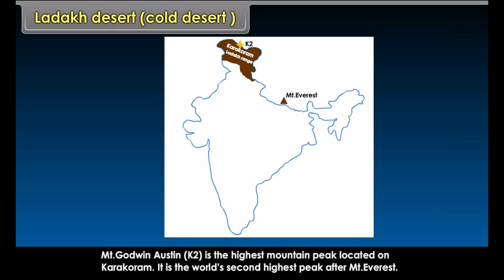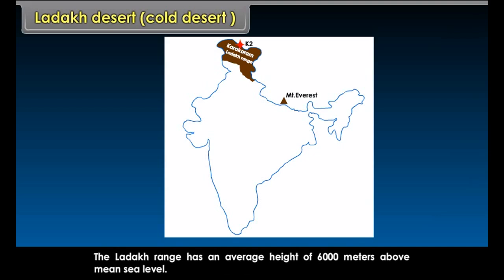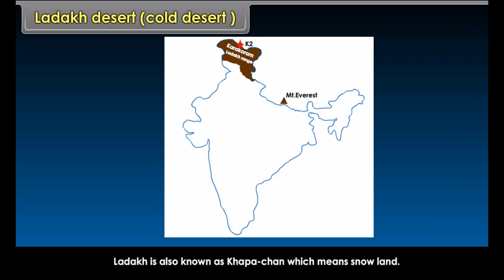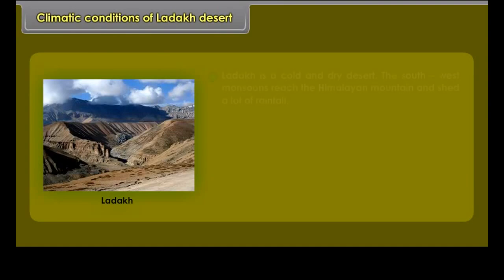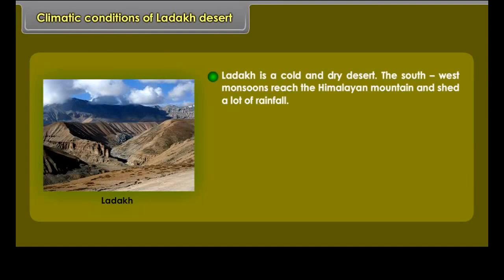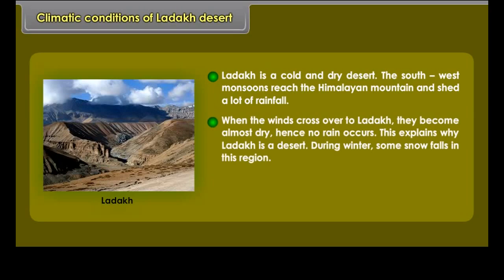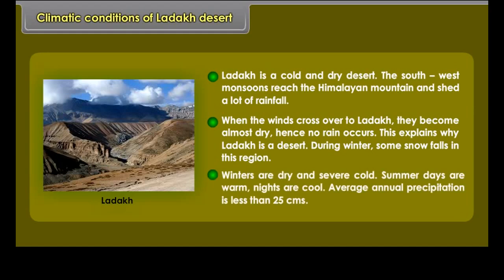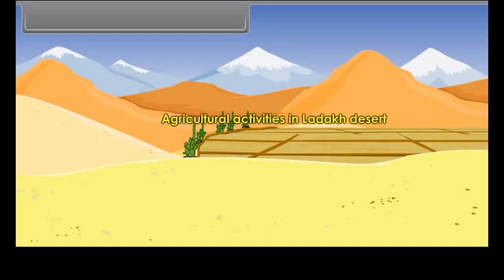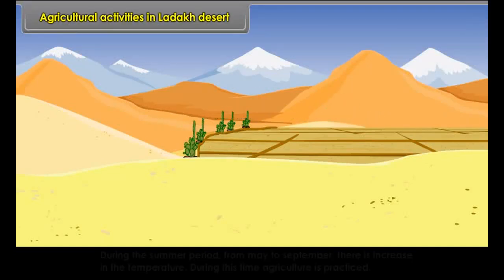Ladakh — Cold Desert. Ladakh is located in the northernmost state of India. It is the eastern part of Jammu and Kashmir. The landscape of Ladakh is highly mountainous. It lies mainly to the north of the great Himalayan mountain ranges. The Karakoram range in the north and the Dzanskar mountains in the south enclose it. Mount Godwin-Austin K2, the world's second highest peak after Mount Everest, is located on the Karakoram. The Ladakh range has an average height of 6,000 meters above mean sea level. Ladakh is also known as Hapa-chan, which means 'snow land.'